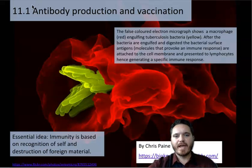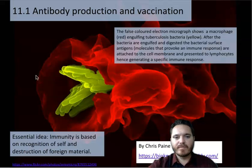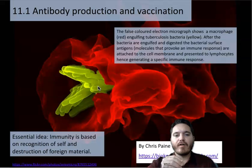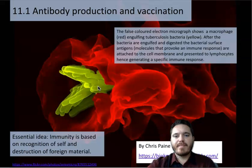Since we're focused on antibody production and vaccination, this is going to be part of the specific immune response, not the non-specific response. Here we've got a really cool micrograph of a macrophage engulfing the tuberculosis bacteria, shown in yellow. The macrophage is the red cell. After the bacteria gets engulfed by the macrophage, it's going to present the antigen from the outside of the bacteria to other lymphocytes, and then the antibody production process would begin.